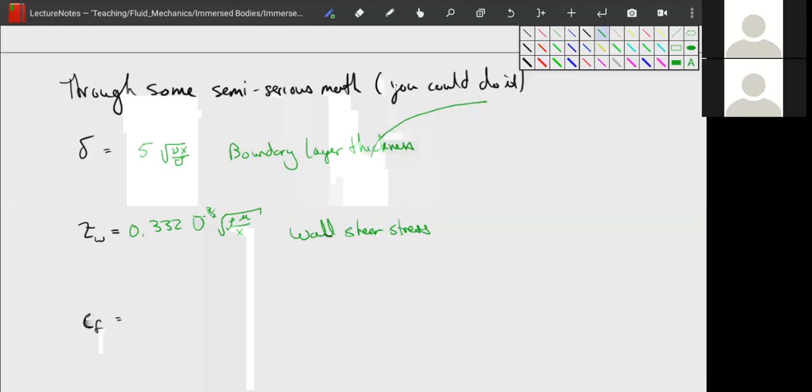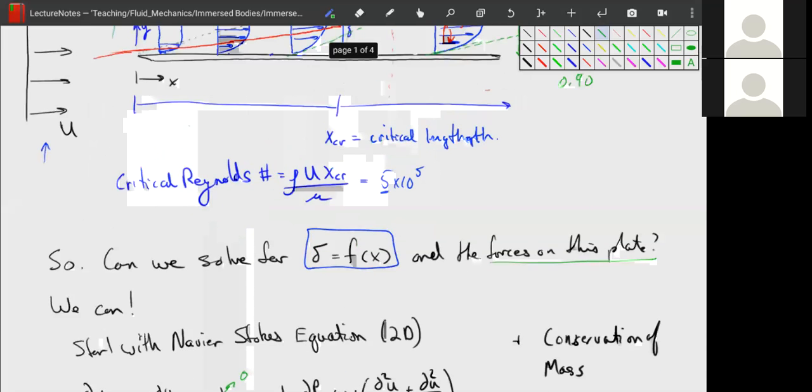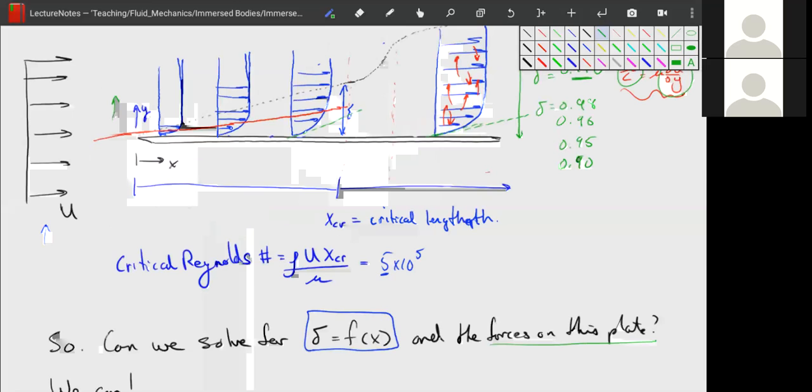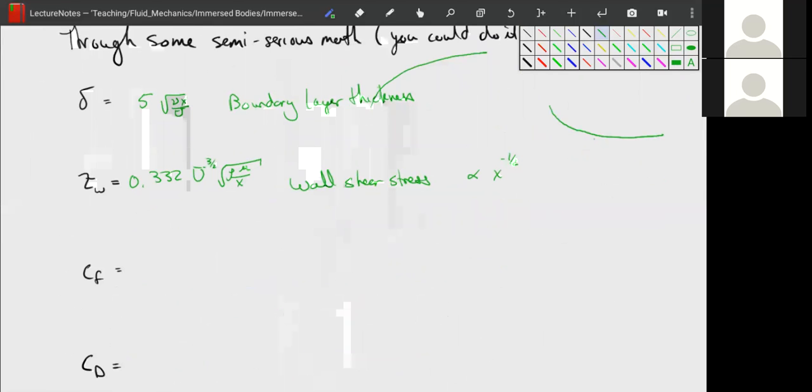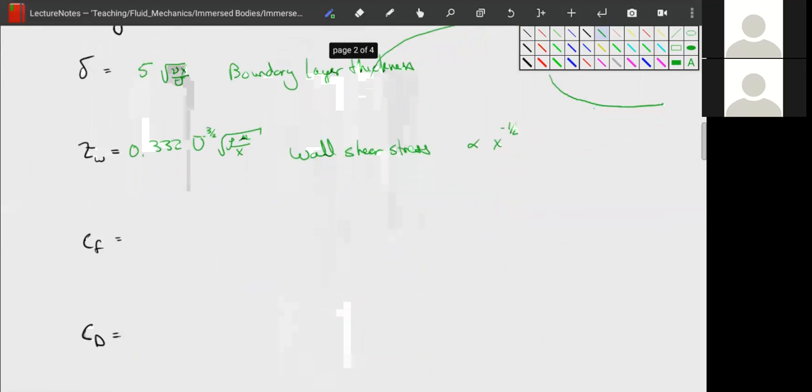So this is really interesting because this tells us that our shear stress is proportional to x to the negative one half. So actually our shear stress falls like one over the square root of x. It starts off very high at the beginning of our plate, and that makes sense because at the beginning of our plate our gradient is very high. See how we have a large change in velocity in a very short period of time in the y direction? Our u velocity changes very quickly, so it makes sense our shear stress starts very high and then decreases as we go along the plate.